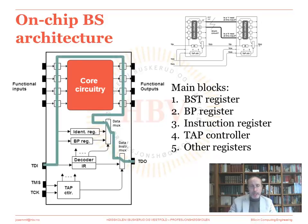You are already familiar with the boundary scan register comprising the set of boundary scan cells that enable us to test the port. The boundary scan register will be connected between TDI and TDO if these two multiplexers are connected as shown in this case.